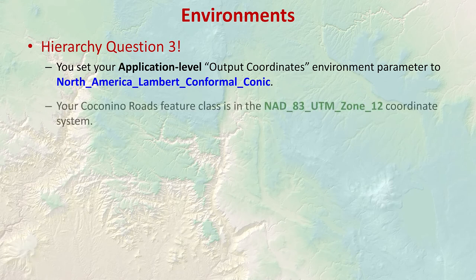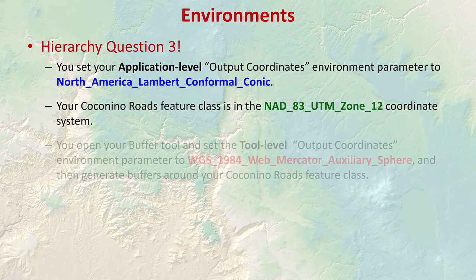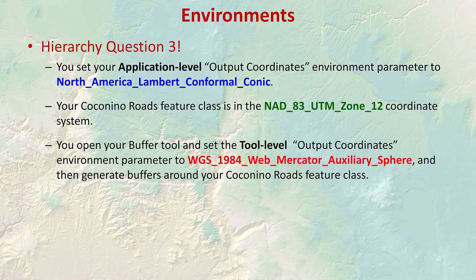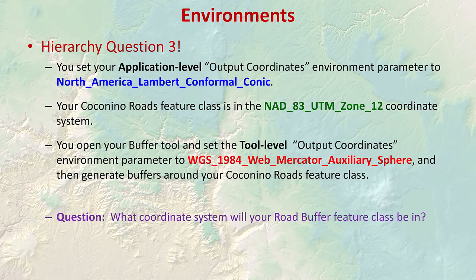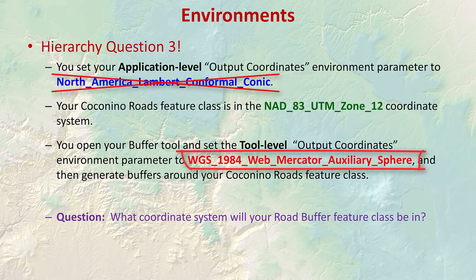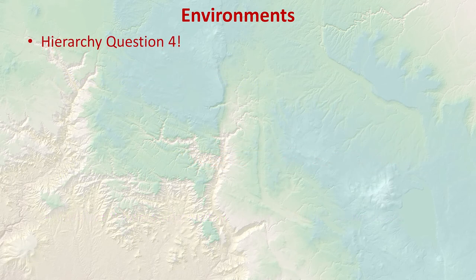Let's complicate things. We've set our application-level coordinate system to Lambert Conformal Conic, and our roads are still in UTM Zone 12. But when we open the buffer tool, we set the tool-level output coordinates to Web Mercator Auxiliary Sphere. Now we have conflicting environments — the application wants Lambert Conformal Conic, the tool wants Web Mercator Auxiliary Sphere. Who wins? Remember: the tool setting overrides the application setting, so the buffers will be in Web Mercator Auxiliary Sphere.